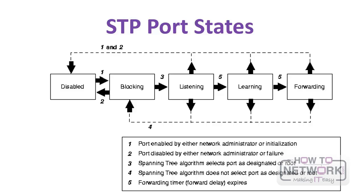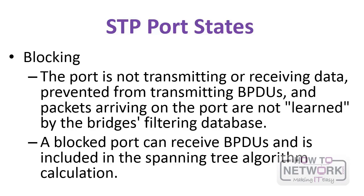802.1D has five different port states: disabled, blocking, listening, learning, and forwarding. When a switch port is in blocking mode, the port is not transmitting or receiving data and is prevented from transmitting BPDUs. Packets arriving on the port are not learned by the bridge's filtering database. However, a blocked port can receive BPDUs and is included in the spanning tree algorithm calculation — it could ultimately be used to transfer data, but it's blocking at this point.